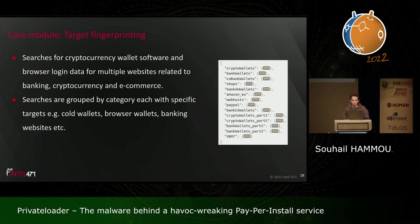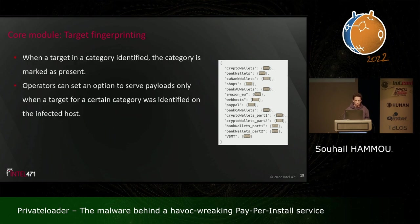Another interesting feature is target fingerprinting: the core module searches for cryptocurrency wallet software and browser login data for multiple websites related to banking, cryptocurrency, and e-commerce. These searches are grouped by category — browser wallets, banking websites, etc. When a target is identified, that category is marked as present on the infected host but not exfiltrated. Operators can set an option to serve payloads only when a target category is present — for example, an actor delivering a stealer interested only in crypto wallets will check for that category before delivering, avoiding sending the payload to the entire botnet.